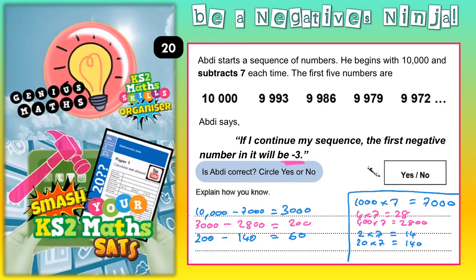So from 60 how many 7s could I take away? Well 8 times 7 is 56 and 60 take away 56 leaves you with 4.